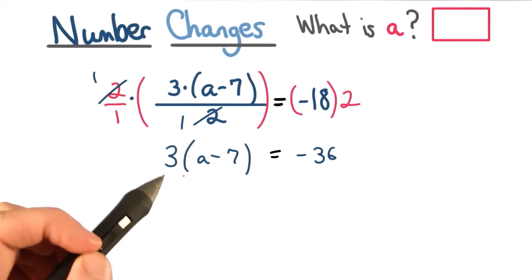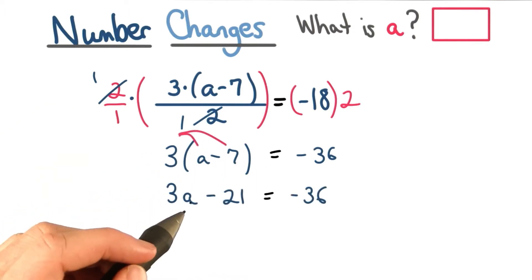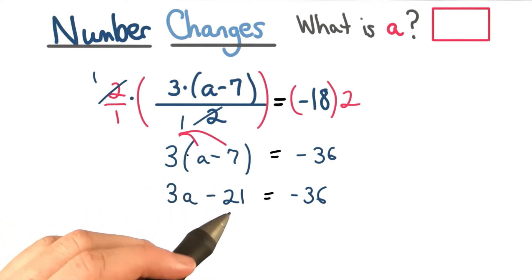Now we want to clear the grouping, so we can distribute this positive 3 to each term. 3 times a is 3a, and 3 times negative 7 is negative 21.